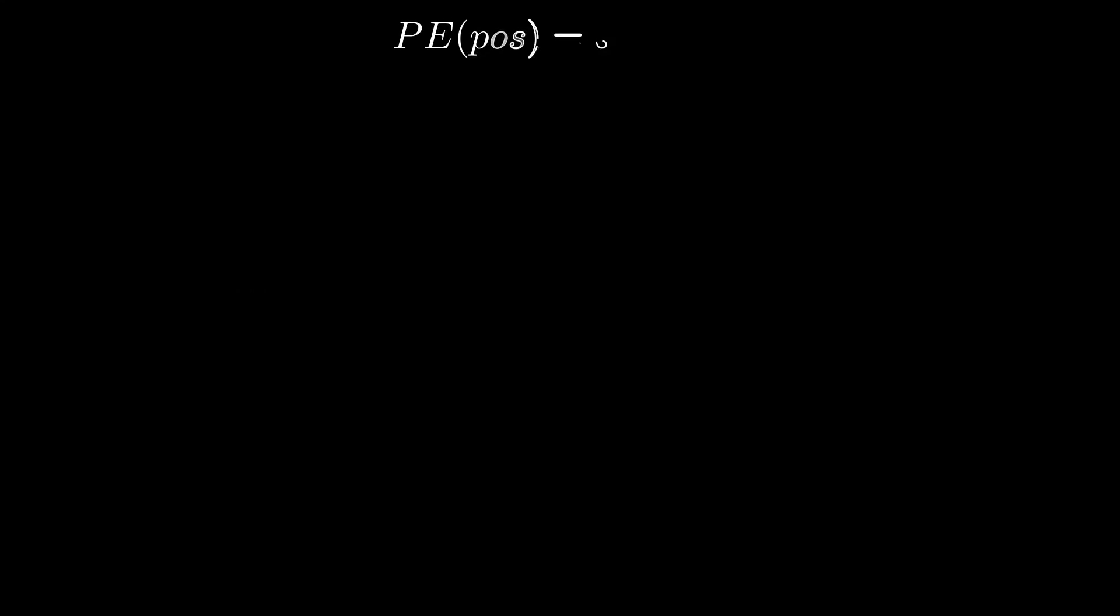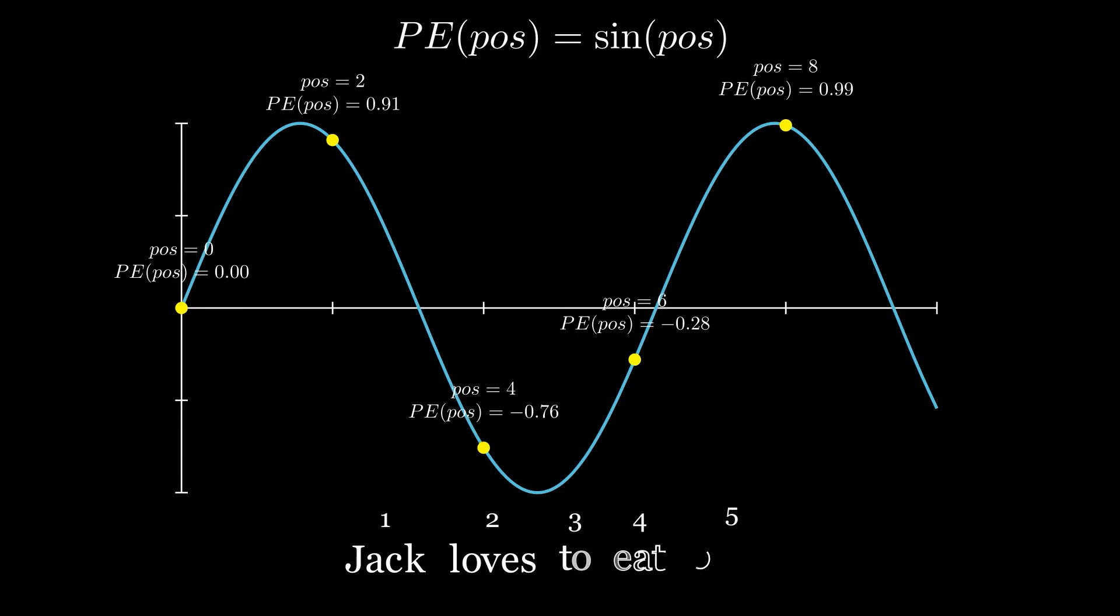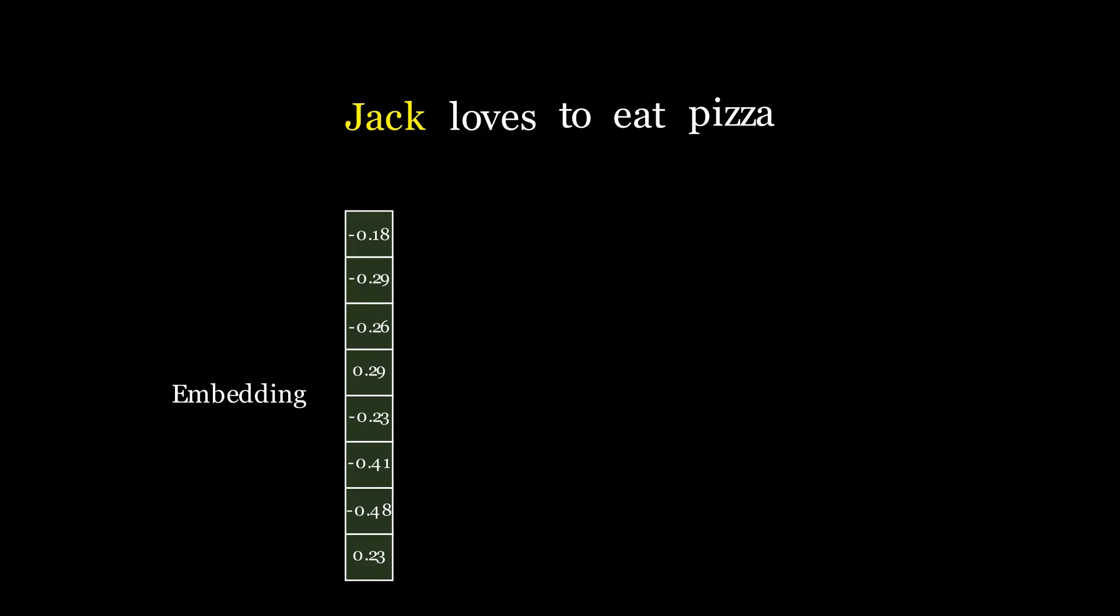Let us forget about embeddings for a moment and just imagine we have the position of a word. We can find the PE of that by writing PE(POS) equals sin(POS). If we plot that out, we can see that for different positions we get different values. Now let's bring back the embeddings into the picture. What we essentially did by writing PE(POS) equals sin(POS) is calculate the encoding for just the first location of the embedding vector. What we now need to do is calculate the same value for each i.